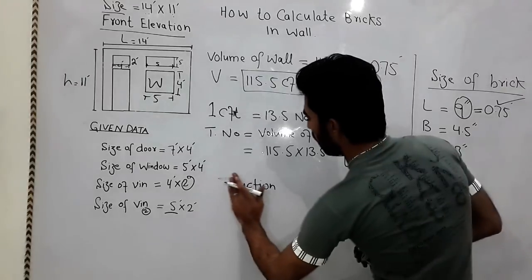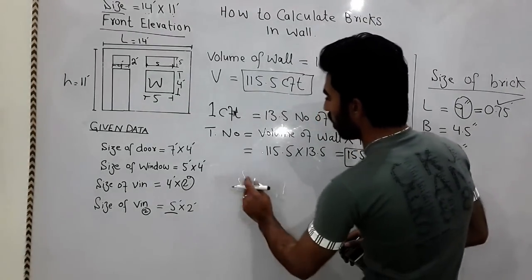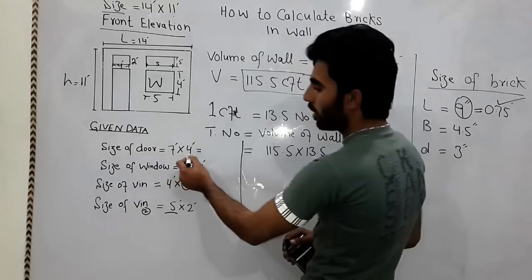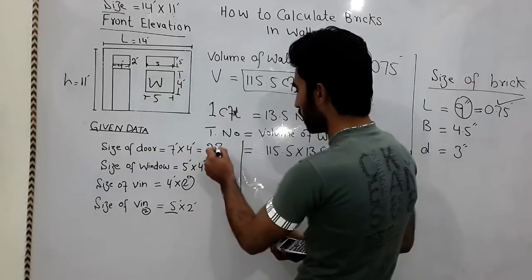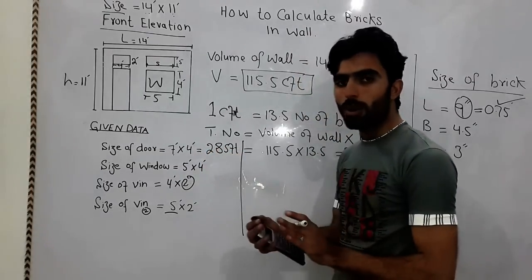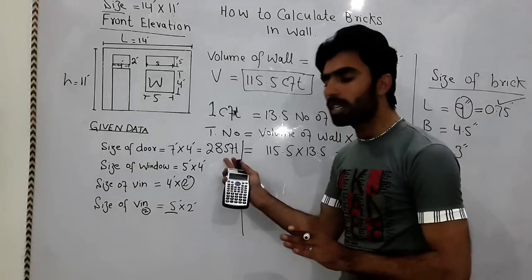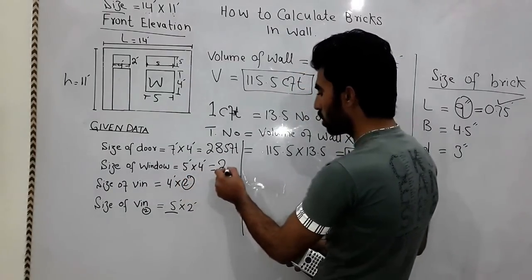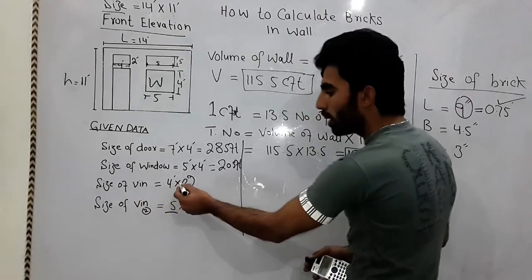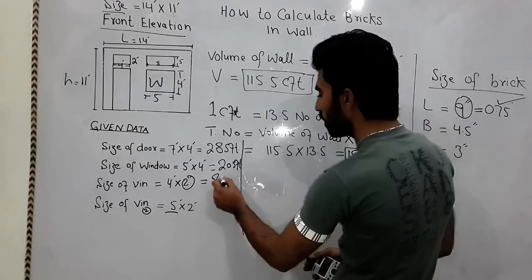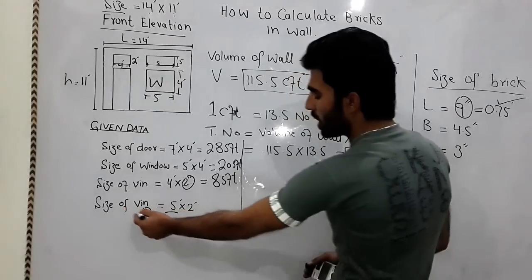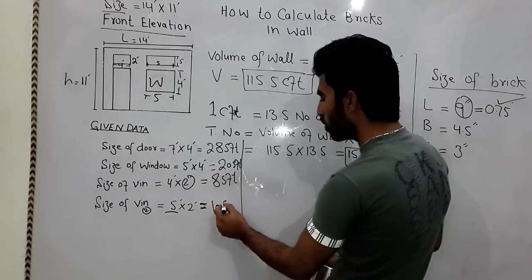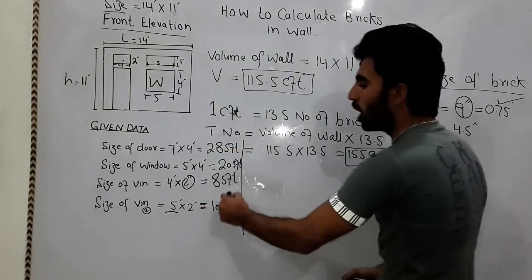Now for the deductions: the door area is 7 × 4 = 28 square feet. The window area is 5 × 4 = 20 square feet. The first ventilator area is 4 × 2 = 8 square feet. The second ventilator area is 5 × 2 = 10 square feet.